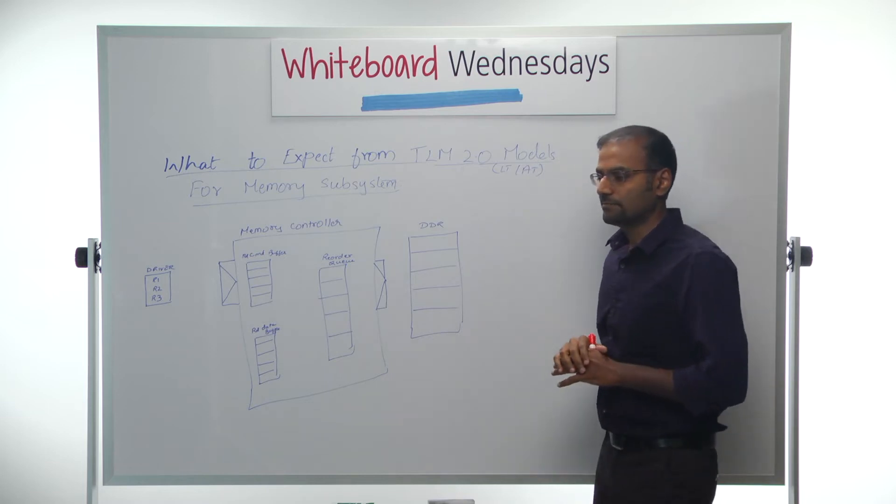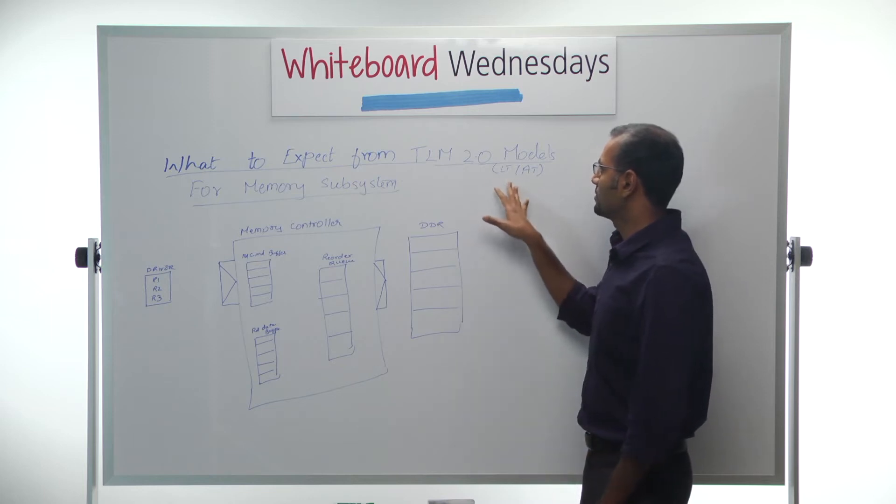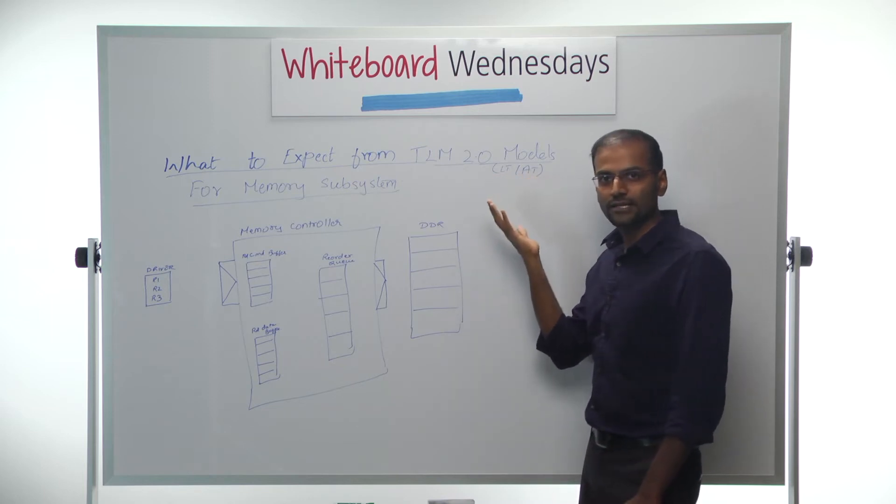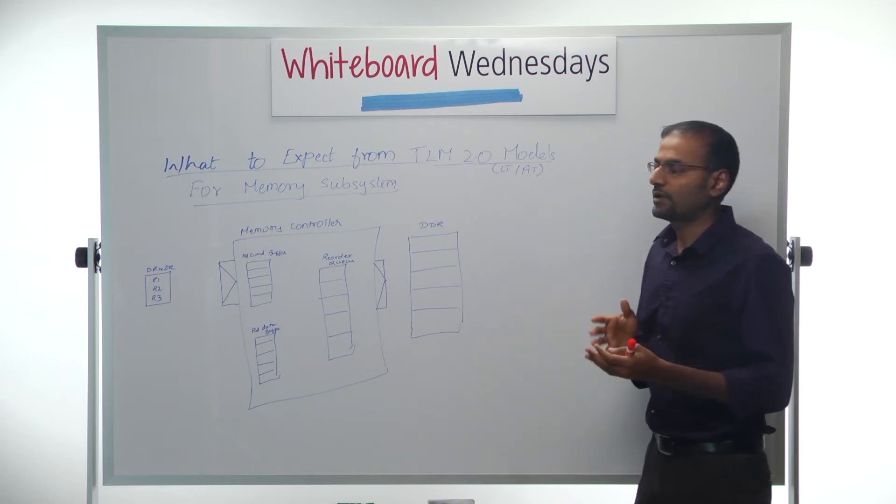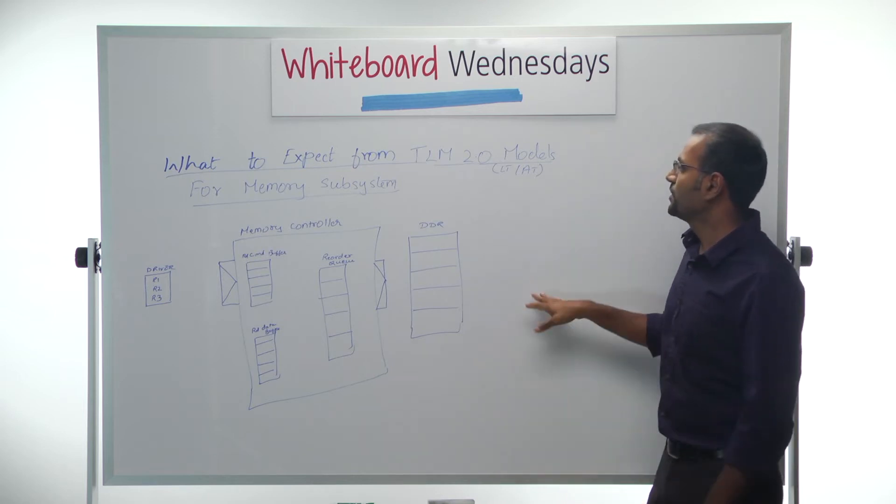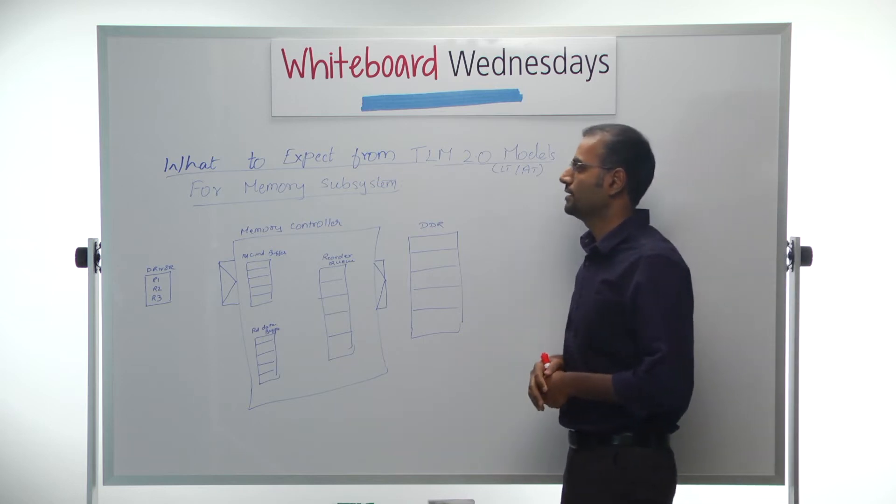There are tons of videos and materials out there which go into details about LT and AT coding styles. But what I'm going to do here is talk more in terms of the behavior and what to expect given a TLM 2.0 memory model, LT or AT, what you get from each of these. And in this video, I will focus only on the LT version and we'll see what AT is later.